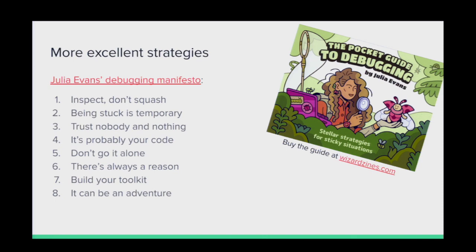Mike suggested this: it's a zine with a bunch of really good tips and tricks for debugging strategies. A few tips that come out of it: 'Inspect, don't squash' — if something's broken, don't just wipe it out and move on. You need to look at the problem to find the cause. 'Being stuck is temporary' — it can be really demoralizing when you're stuck and don't know why something isn't working. But keep in mind that being in that state is temporary; you'll get through it.